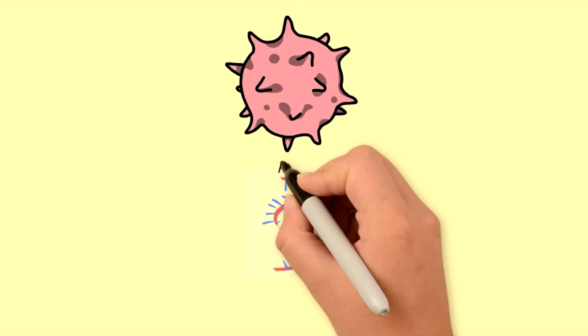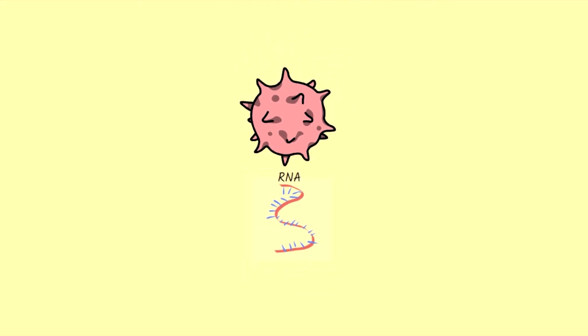SARS-CoV-2 has an RNA genetic code, unlike most organisms, which have a DNA genetic code. When the virus's RNA enters the cell, it goes to a ribosome.